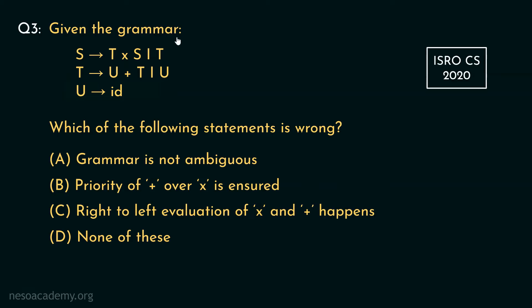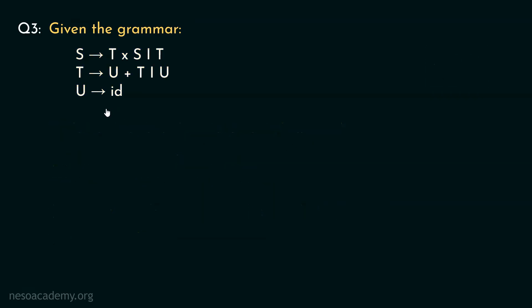Given the grammar. So this is the grammar and from these options we are to find out which one of the statements is wrong. Consider the grammar. It has the non-terminals S, T and U. The terminals or constants are this multiplication operator, this plus operator and this id. Look at the production rules carefully, especially these two.